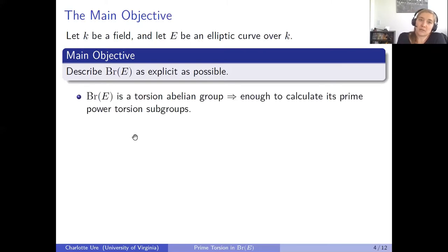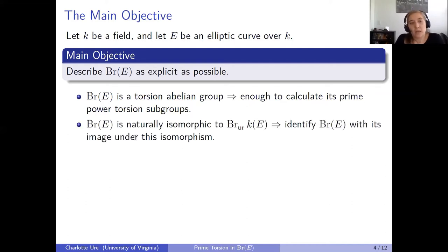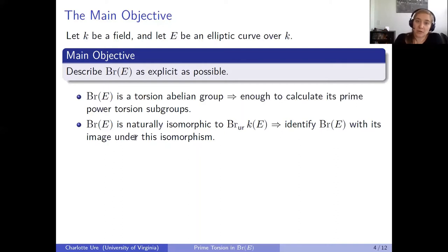What will help us is first that the Brauer group of an elliptic curve is always a torsion abelian group, which follows from its identification with the torsion of the second étale cohomology. Second, the Brauer group of E is naturally isomorphic to the unramified part of the Brauer group of the function field k(E), which means we can work with central simple algebras over the function field, which are usually much easier to handle.